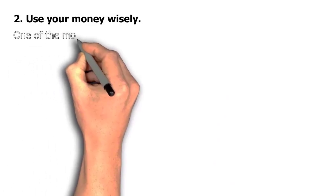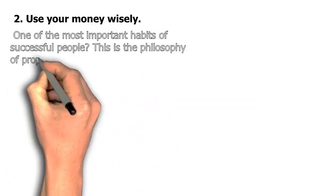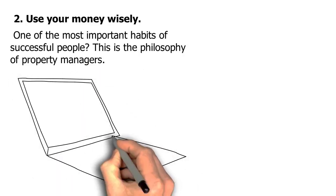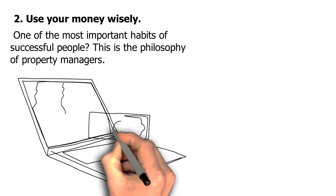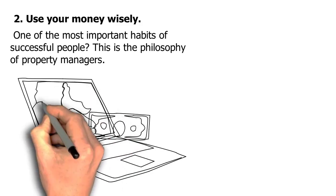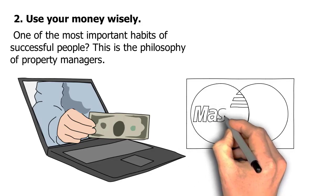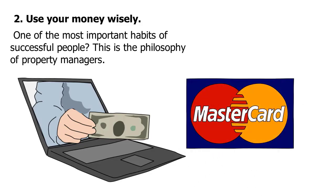Number two, use your money wisely. One of the most important habits of successful people? This is the philosophy of property managers. The action can be habitual and automatic. If we jump into spending without planning, it can quickly spiral out of control and become chaotic. One of the best ways to save money is to take the time to plan everything. It can be tricky, but once done, you'll be surprised how much thought you put into it before pulling a card.